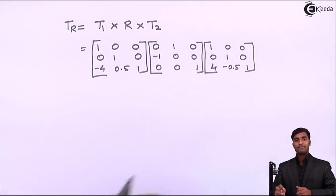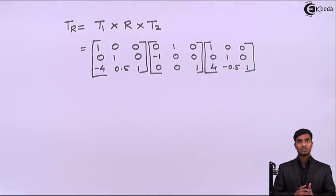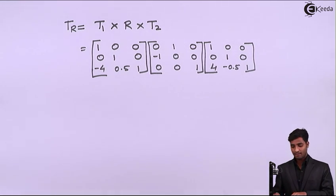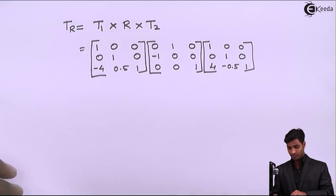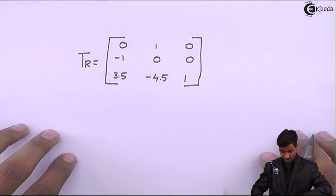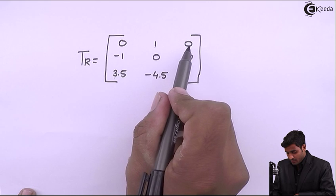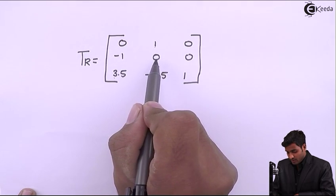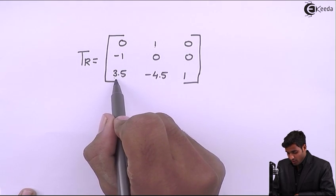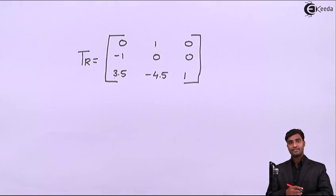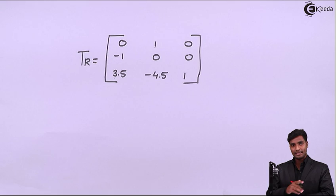Multiplying all these matrices — T1, R, and T2 — the final resultant transformation matrix TR is: [[0, 1, 0], [-1, 0, 0], [3.5, -4.5, 1]]. This is the resultant transformation obtained after multiplying all the matrices.